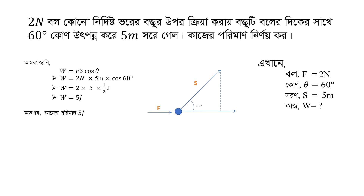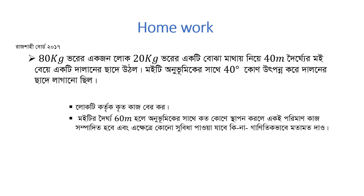2 N বলের দ্বারা ভারের বস্তুর উপর কাজ করা হয় — বস্তুটি বলের দিকের সাথে 60 ডিগ্রি কোণ উৎপন্ন করে 5 মিটার সরণ করে। W = F × S × cosθ — cosθ এর মান: cos60° এর উপর আমরা ক্যালকুলেশন করলাম। ক্যালকুলেশন করার ফলাম আমাদের রাশি হলো 2017। এই অঙ্কটা আছে — অঙ্কটা তোমরা হোম ক্যালকুলেশন করবে।